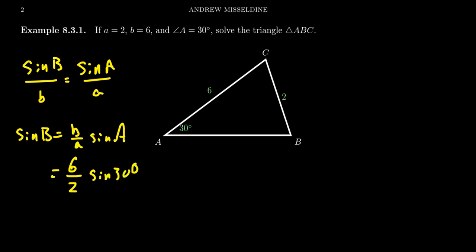Now, sine of 30 degrees is, of course, one half. 2 goes into 6 exactly 3 times. Sine of 30 degrees is one half. And so we end up with sine of B is equal to 3 halves or 1.5 if you prefer the decimal there.